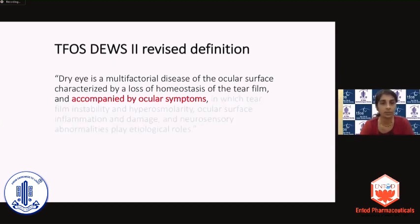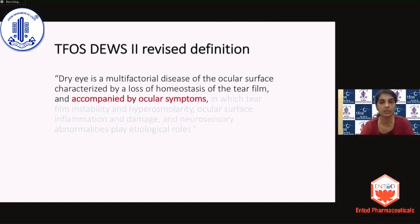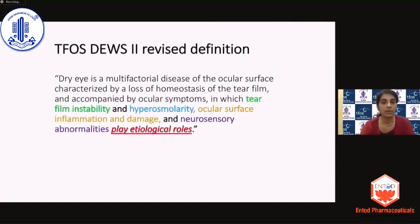The subcommittee was actually very tempted to stop the definition of dry eye with just the first half. But they decided to include the second half mainly to emphasize that these four factors — tear film instability, hyperosmolarity, ocular surface inflammation and damage, and neurosensory abnormalities — play etiological roles and are not mandatory diagnostic criteria, as was misinterpreted from the earlier version of the definition given in the TFOS DEWS I report.